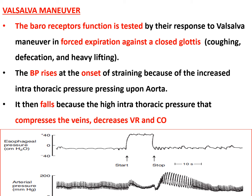Blood pressure increases as the Valsalva maneuver starts. After that, while the maneuver continues, blood pressure falls because venous return to the heart has decreased and cardiac output has decreased — the veins are being compressed by the high intrathoracic pressure. With high intrathoracic pressure during Valsalva, venous return is reduced, making both venous return and cardiac output less than normal.